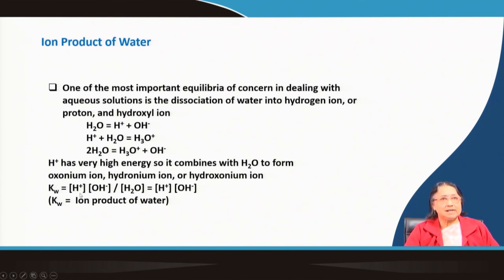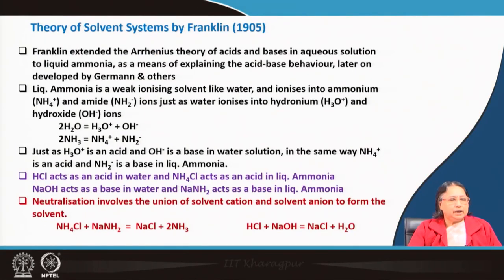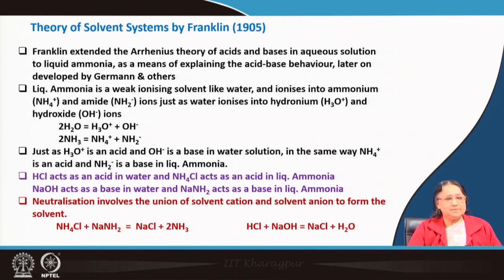Kw is nothing but the H⁺ ion concentration multiplied by the OH⁻ ion concentration divided by the water concentration, and this is called the ionic product of water. It is the equilibrium constant of the dissociation of the water molecule. This concept which Arrhenius described in aqueous medium was then extended by Franklin in 1905.